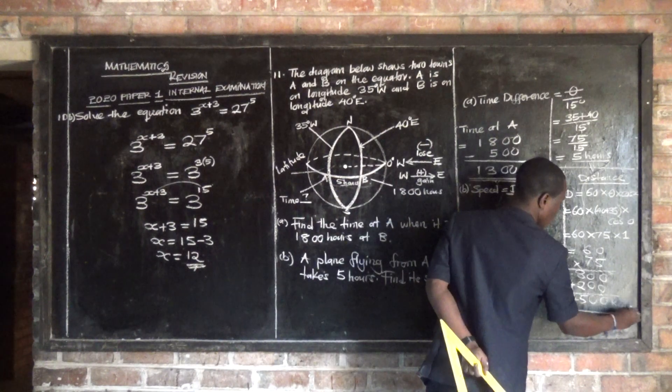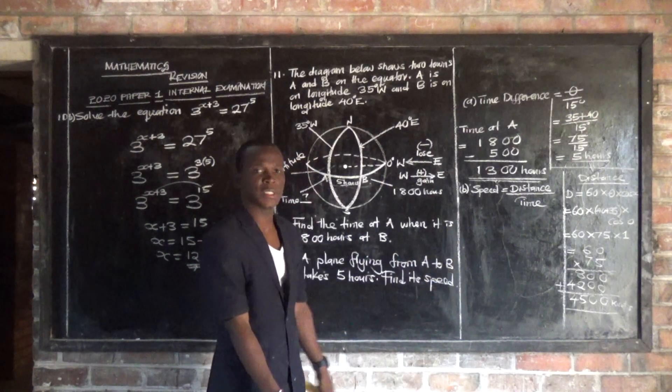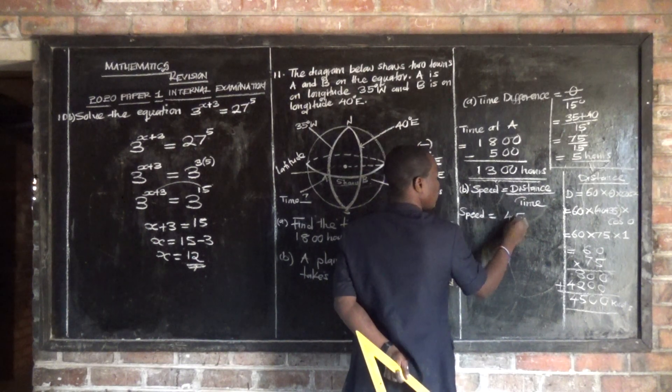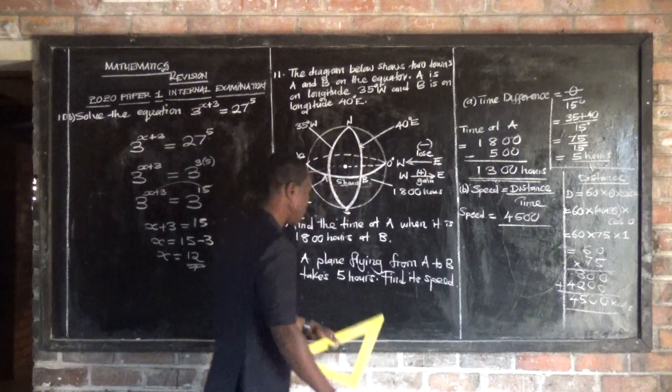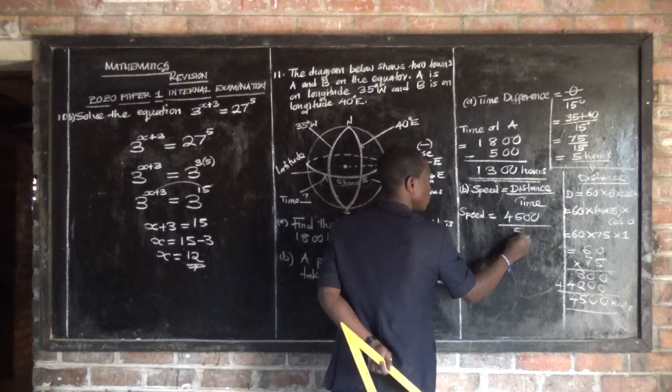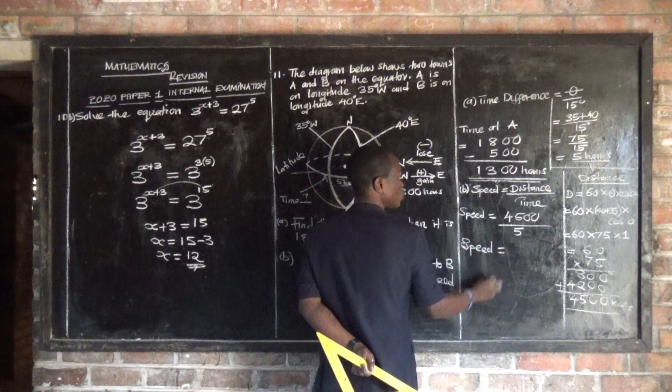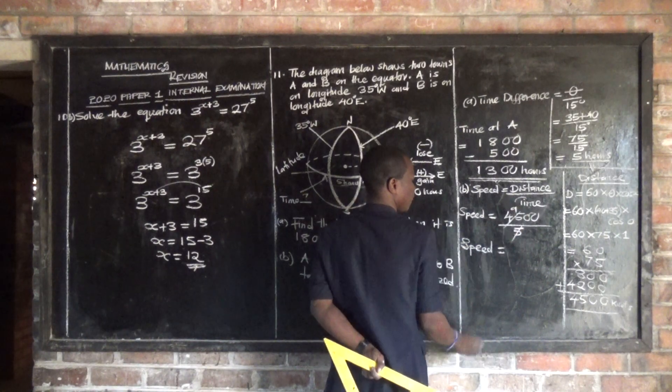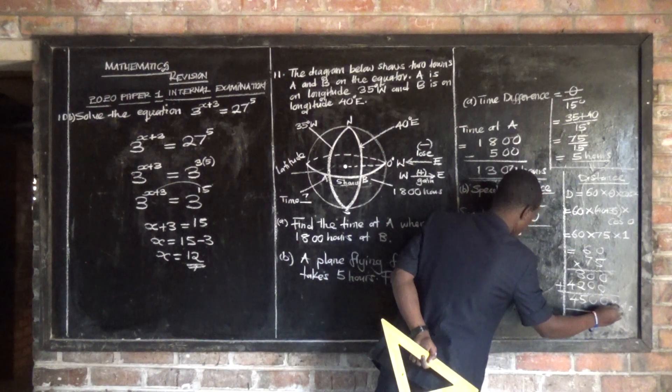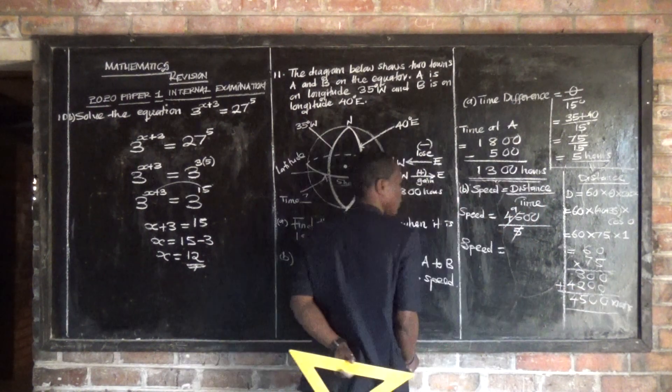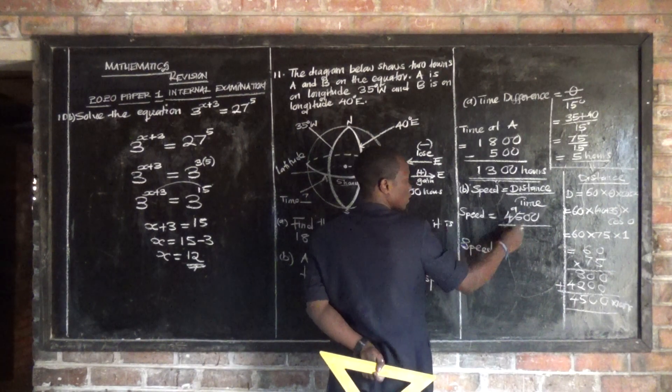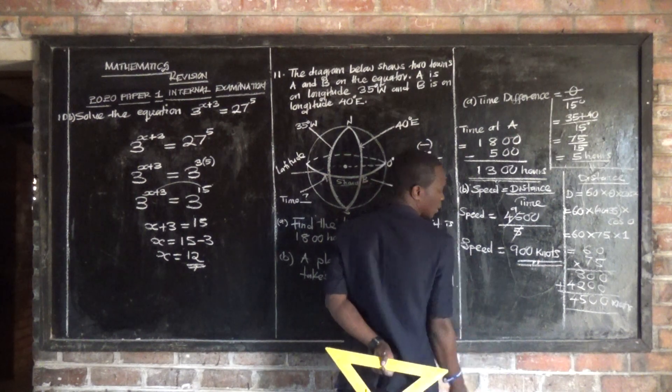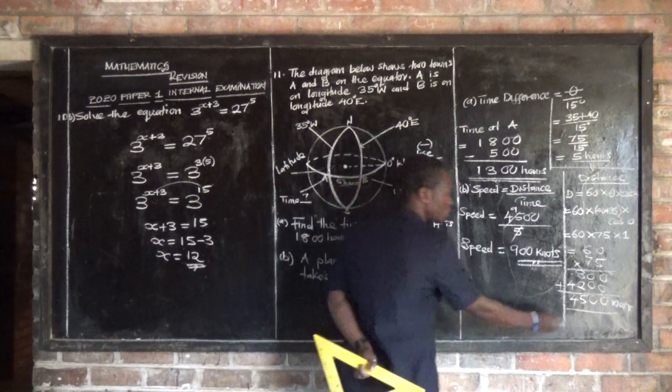So speed is equal to distance over time. The distance is 4500 nautical miles over 5 hours. So the speed is equal to, you can divide and say 45 divided by 5 is 9. So it's 900 knots. This is our speed. The distance is in nautical miles.